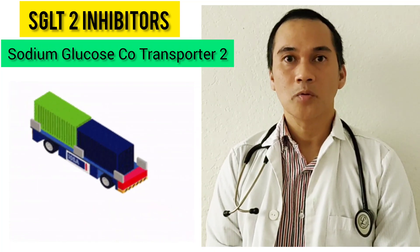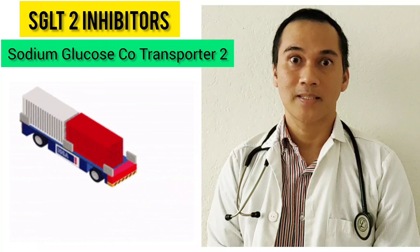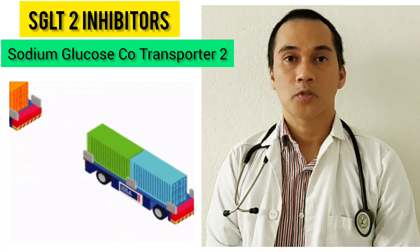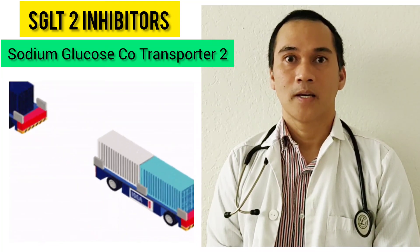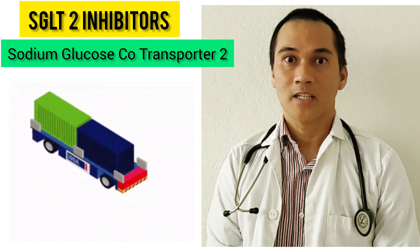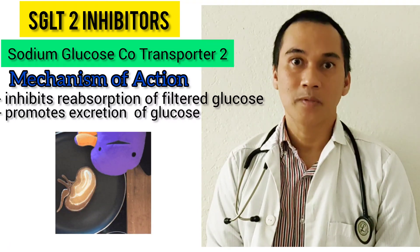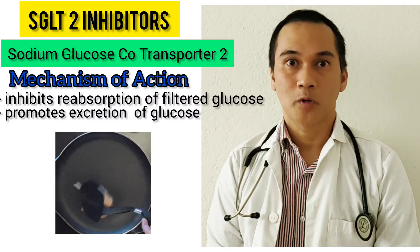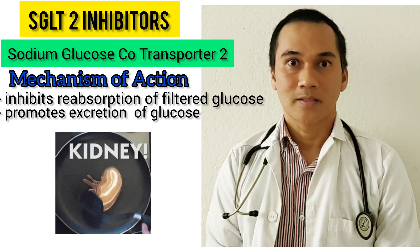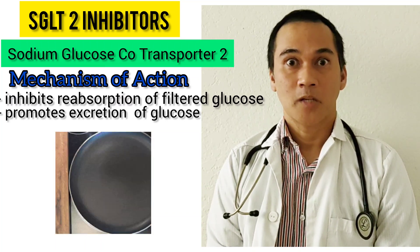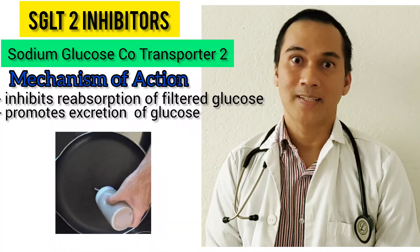SGLT2 transporters are found in the proximal tubules of the kidneys and their function is to reabsorb filtered glucose back into the circulation. So SGLT2 inhibitors will inhibit the reabsorption of filtered glucose back into the circulation, and instead promote excretion of blood glucose in the urine.